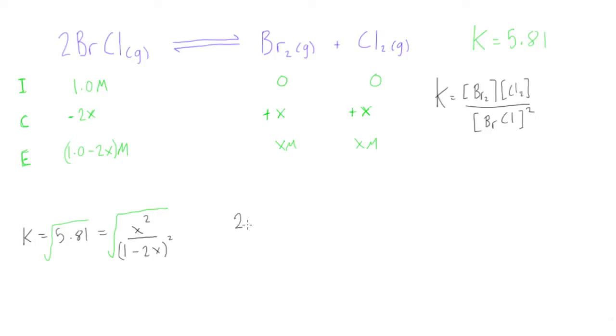What we can do here is because of the perfect square, we can just remove these squares here and we get X over 1 minus 2X. Now all we have to do is just rearrange and we want to solve for X. So basically we can go—this is just easy rearranging—2.41 times 1 minus 2X is equal to X. And basically what we're gonna get here is 2.41 minus 4.82X is equal to X.